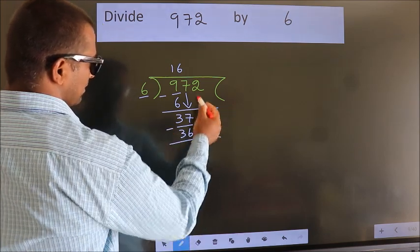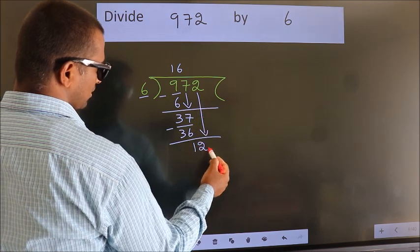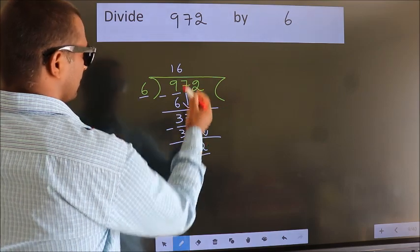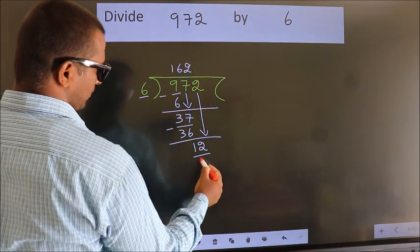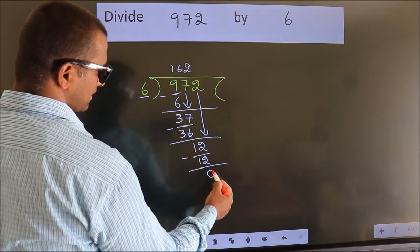After this, bring down the beside number. So, 2 down. So, 12. When do we get 12 in the 6 table? 6 twos, 12. Now we subtract. We get 0.